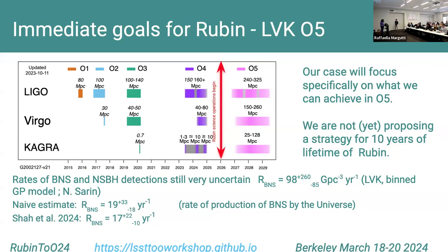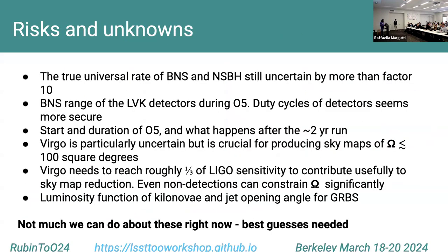Our science case will focus specifically on what we can achieve during observing run five. We don't want to propose a strategy for the full ten years because the rates are still uncertain. The true universal rate for BNS and neutron star–black hole mergers are still uncertain by more than a factor of ten. The BNS range of the LIGO-Virgo-KAGRA detector during O5 and the duty cycle seem more secure, but we need to see what happens during the first two-year run.